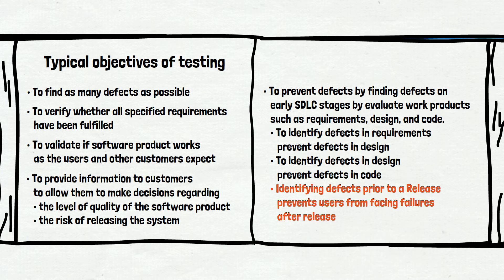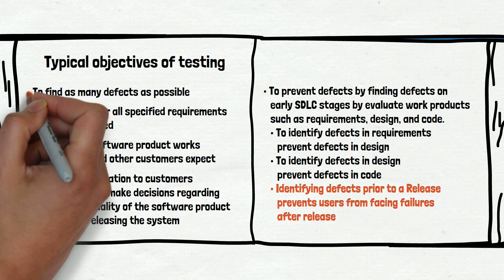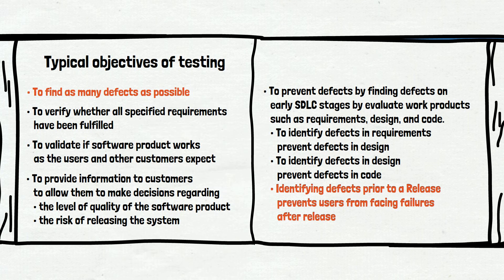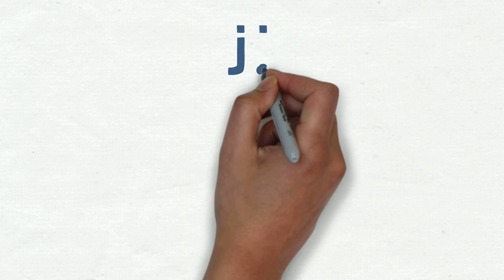Identifying defects prior to release prevents users from facing failures after release. Ideally we should find all the bugs, so you as an end user would never see screens like this. Unfortunately, that is not possible — we will learn about the testing principles in a separate video. So the next best goal is to find as many defects as possible, so you as an end user will see those screens as rarely as possible. We think that is enough theory — let's get familiar with a real life example which will illustrate why testing is important.